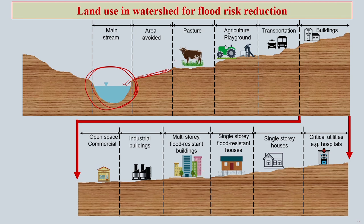Next we can have pasture. This pasture will have a dual role: it can restrict soil erosion, it can also reduce the speed of flood water intrusion towards the land area, and livestock can also be grazed.